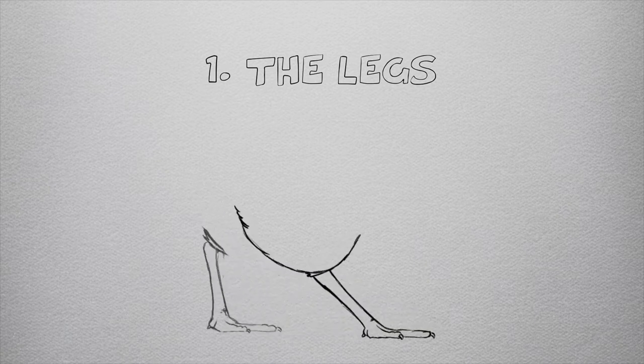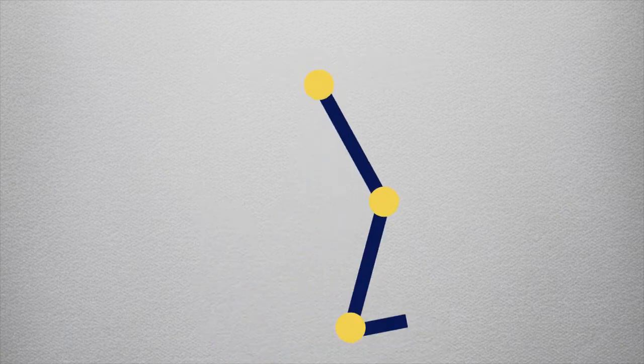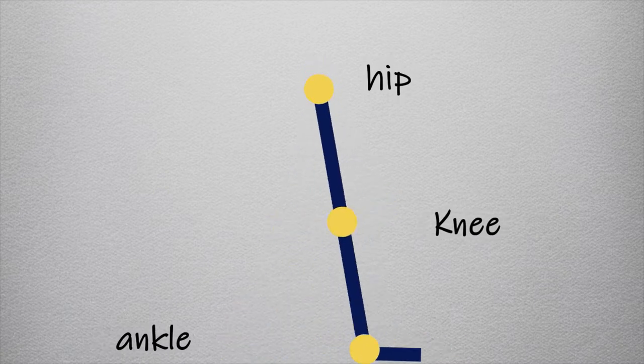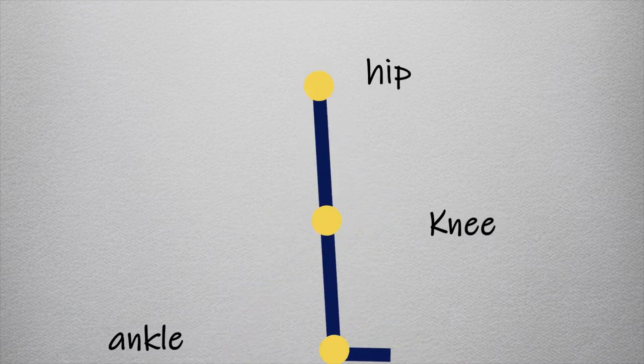The legs. When humans walk, the movement is motivated by the hip, the knee and the ankle, and the foot moves in a smooth, arching motion with every step.